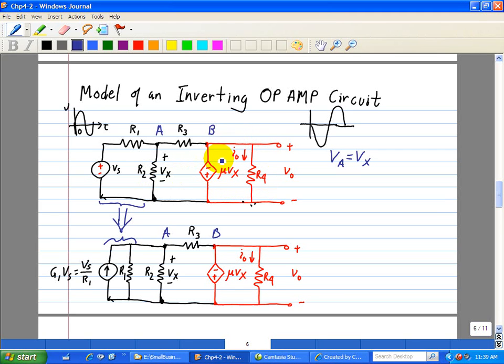So that Va is equal to Vx, which basically is our control voltage controlling this voltage source at our output side of this circuit. Okay, so let's write a node equation at node A, and we can do this by inspection. So what's connected to node A is conductance G1, G2, and G3.